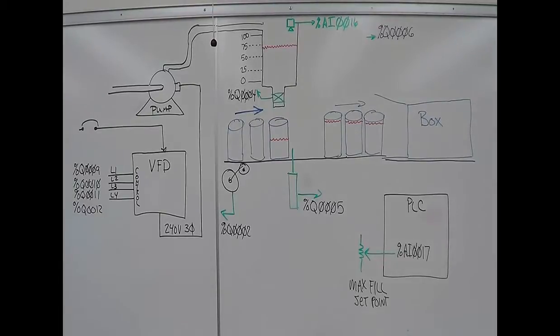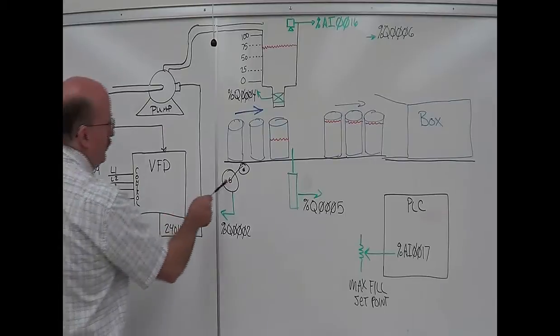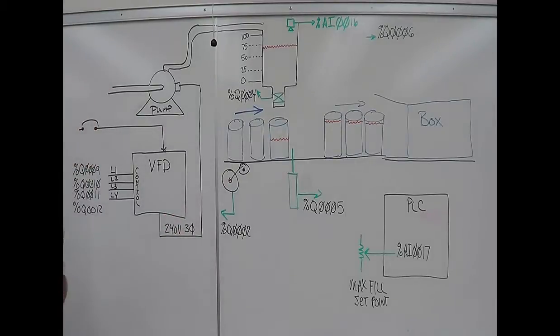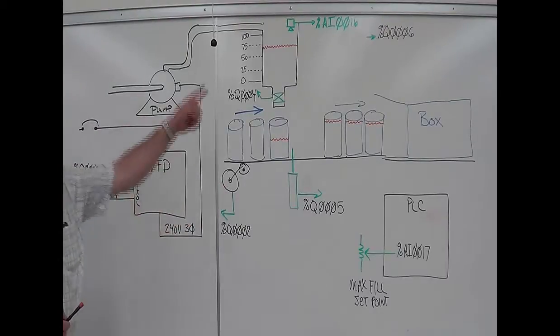What you've got is you'll start off with a start-stop station. You'll start your conveyor running. Once you start your conveyor running, the whole process starts. If the conveyor is not running, nothing else runs.